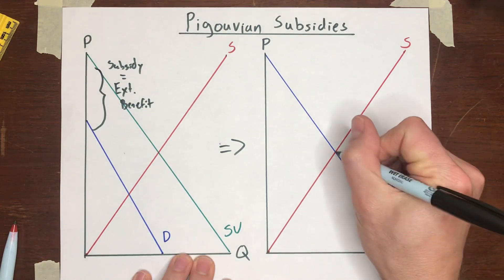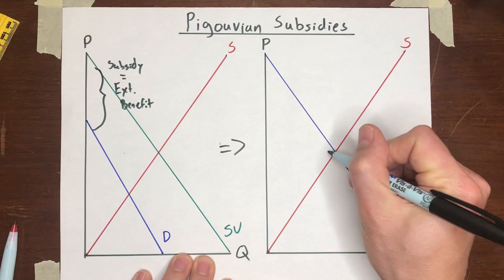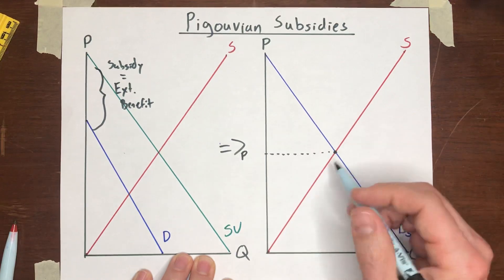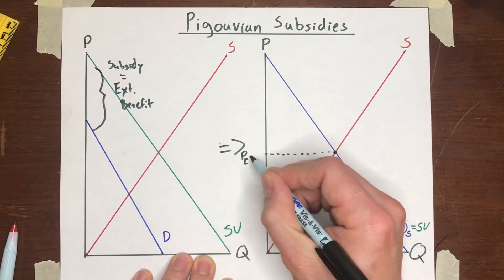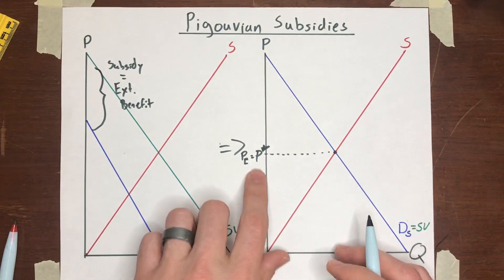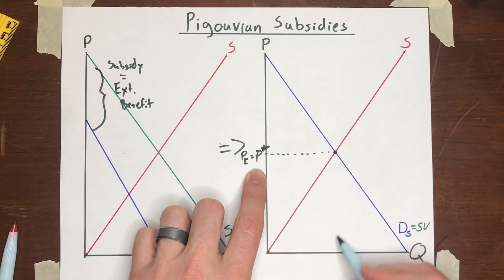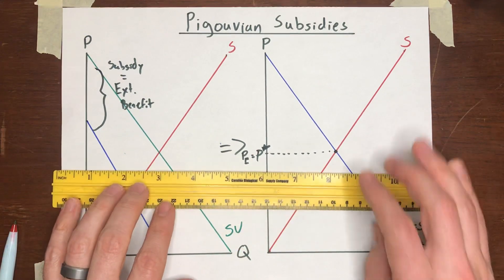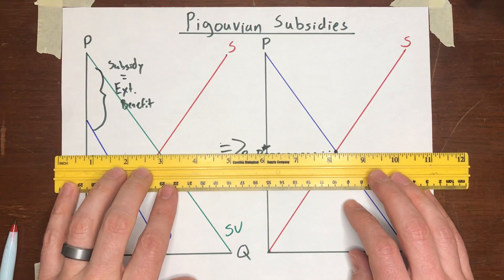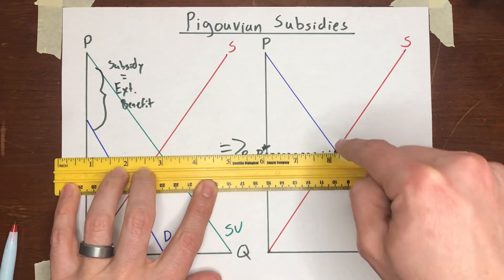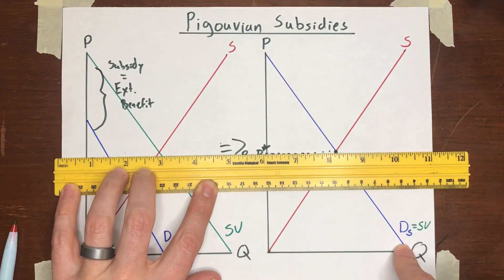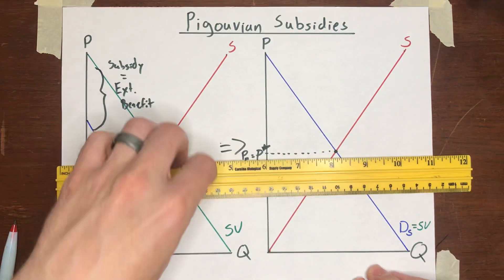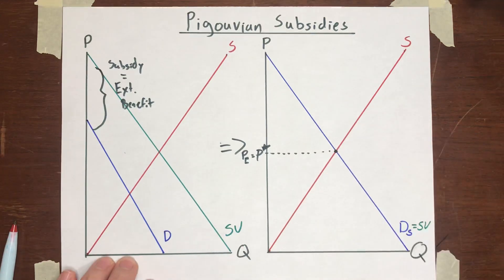And now this socially optimal level of output is exactly the same. And it's that the equilibrium price will be the same as the socially optimal price. And sellers will respond by producing the socially optimal quantity. And again, it might be a little difficult to see just comparing these next to each other, but you can see here, if I just draw a straight line across the price, the equilibrium price here, when I've given the buyers a subsidy is exactly the same as the socially optimal price in this market. So we can make this market efficient.